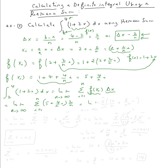Distributing two over n into the expression, we get the limit as n goes to infinity of the sum from i equals one to n of ten over n plus eight over n squared times i. We then split this into two separate sums: the sum of ten over n plus the sum of eight over n squared times i, from i equals one to n.